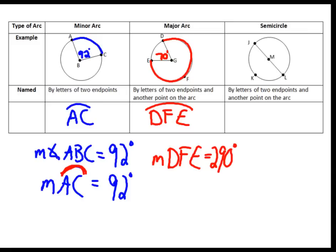A semicircle is just half of a circle. It is named like a major arc — we always use three letters to name a semicircle. The reason you need three letters is because if I just called this JL, you wouldn't know which half of the circle I was talking about. If I wanted to talk about this half of the circle, I would use both endpoints and a point in between. So this would be arc JKL.